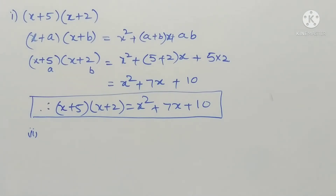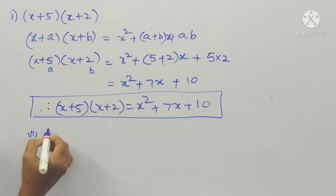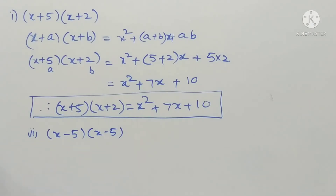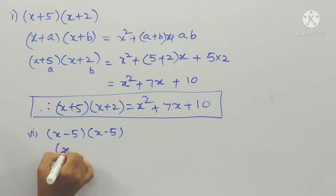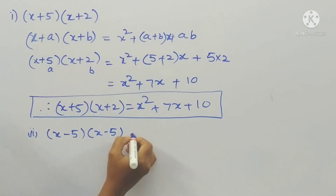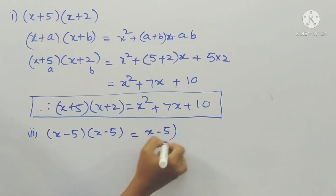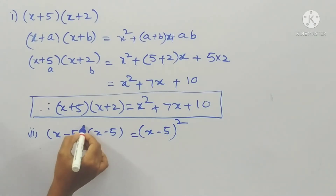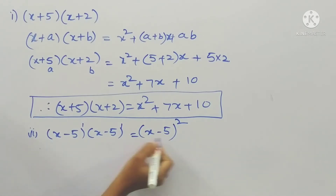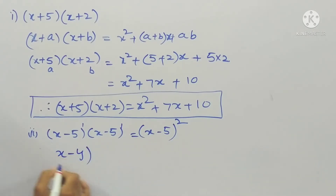The second problem: (x − 5)(x − 5). This is clearly in the form of (a − b)(a − b). Since the bases are equal, the powers are added, so (x − 5)(x − 5) = (x − 5)². This is in the form of (x − y)².